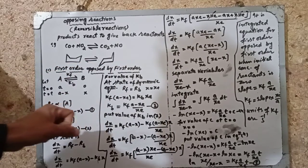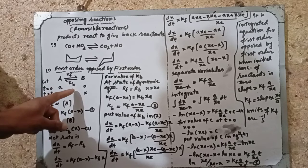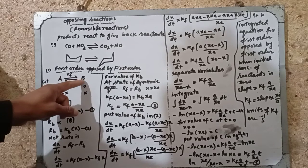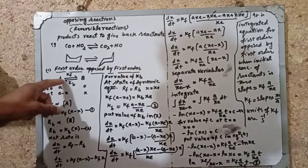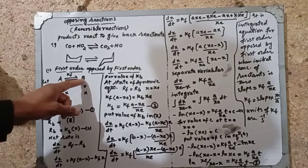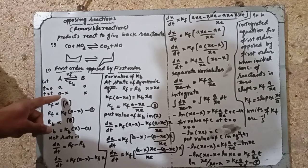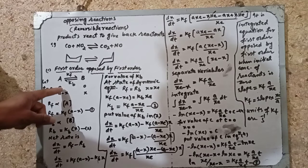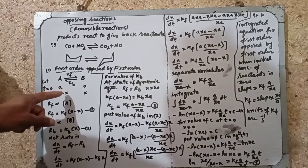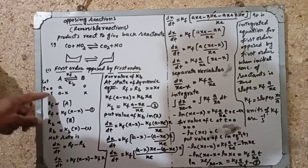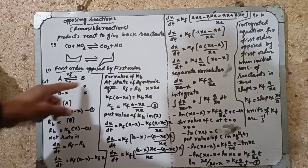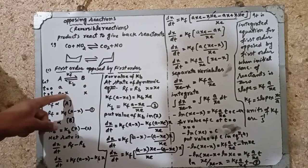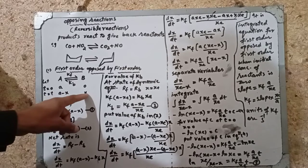First order opposed by first order reaction. Let us consider a reversible reaction where the forward reaction is first order and the backward reaction is also first order — therefore it is first order opposed by first order. When the initial concentration of reactant A is a (non-zero), after time t it becomes a minus x. The initial concentration of product is zero, and after time t it becomes x.